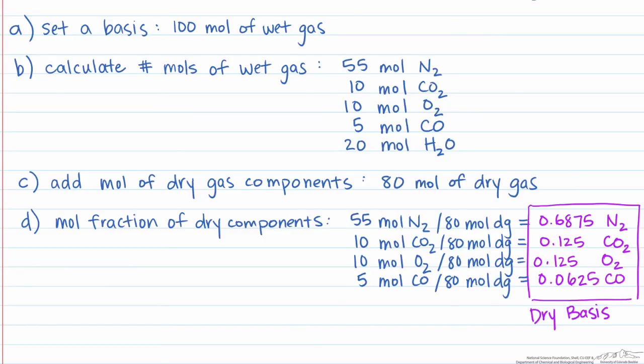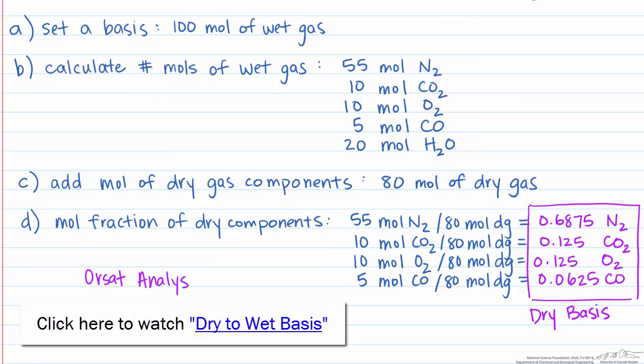That's going to be considered our total moles, so we'll find the mole fractions of each one of these dry components using 80 as our total moles. These are our mole fractions of our components on a dry basis composition, which is also known as an ORSAT analysis. In a subsequent screencast, I'll show you how to do the opposite, which is start with a dry gas basis and find the composition of the wet gas.